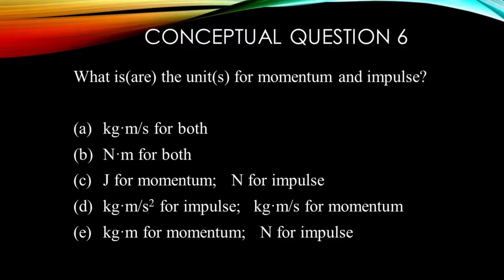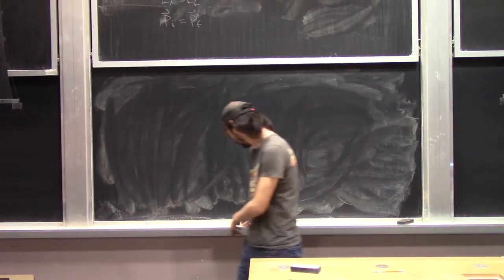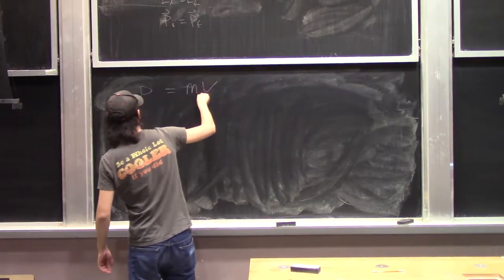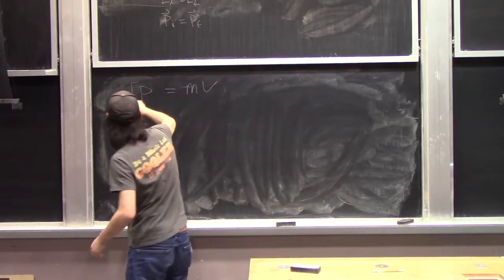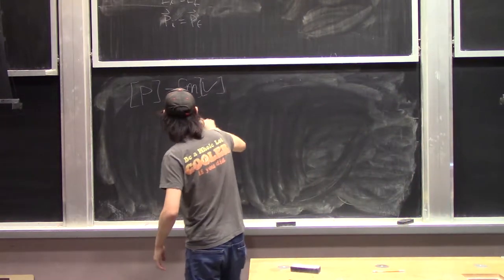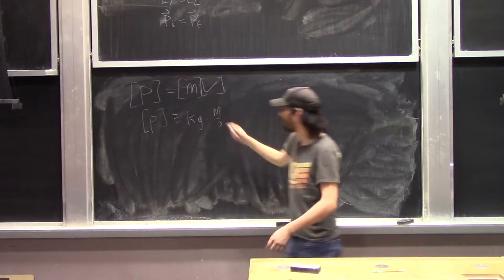The next question asks: what are the units for momentum and impulse? Momentum is mass times velocity, so the units are kilograms times meters per second. The units of momentum are equal to the units of mass — kilograms — times the units of velocity — meters per second — giving kilogram meters per second.